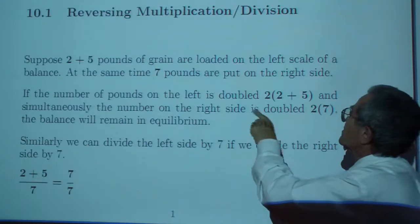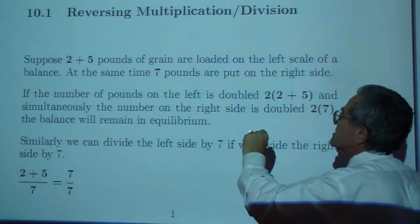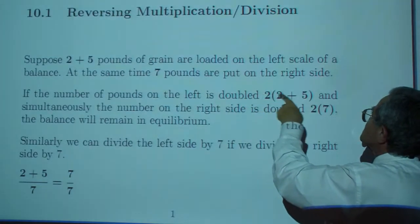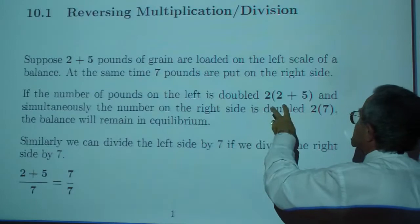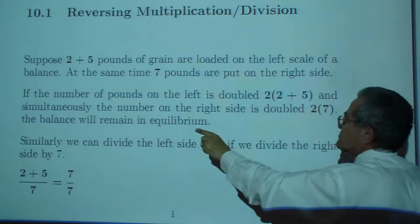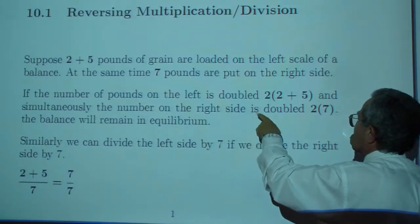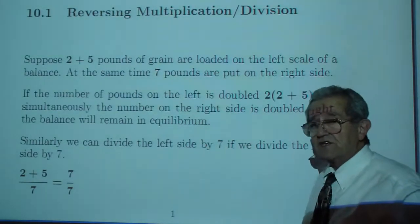Suppose 2 plus 5 pounds of grain are loaded on the left scale of a balance. At the same time, 7 pounds are put on the right side. If the number of pounds on the left is doubled, like 2 times (2 plus 5), and simultaneously the number on the right side is doubled, like 2 times 7, the balance will remain in equilibrium.